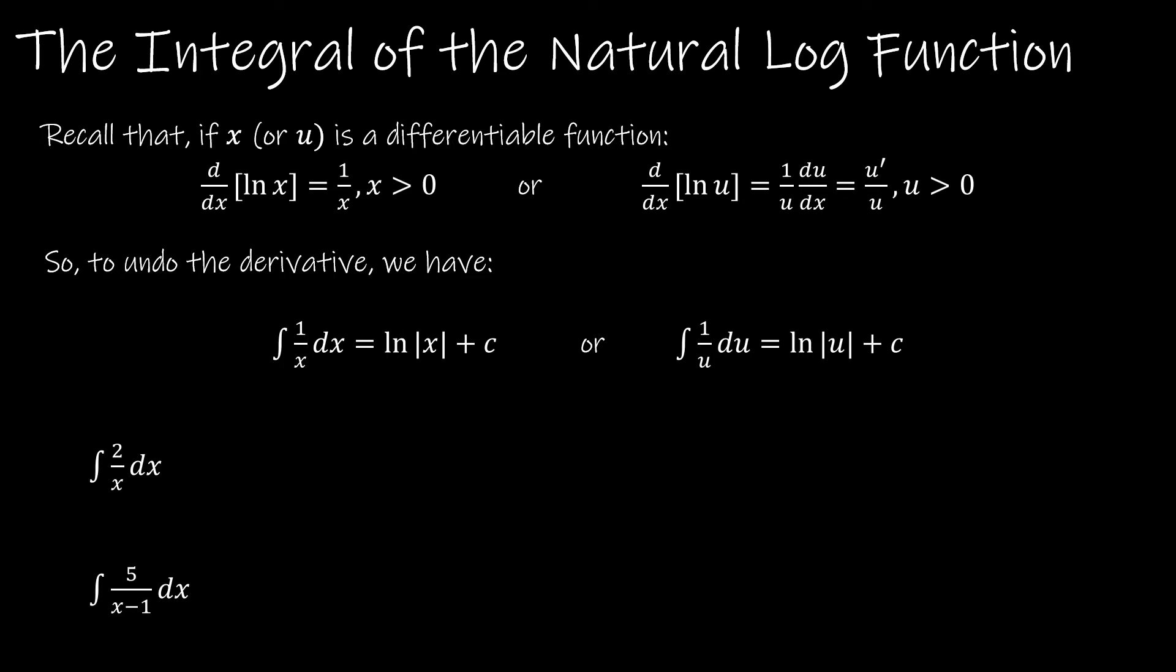Let's take a look. These two are very straightforward examples. For the first one, I've got the integral of 2 over x. If you think about this, this is just 2 on the outside, so it's 2 times the integral of 1 over x dx. That's very straightforward, just going to be 2 times the natural log of the absolute value of x plus c.